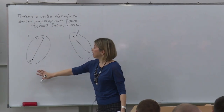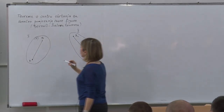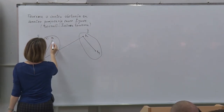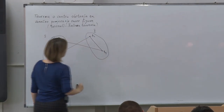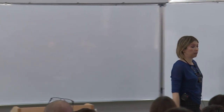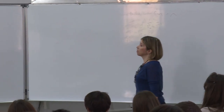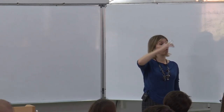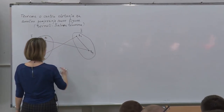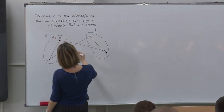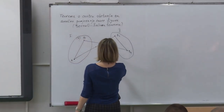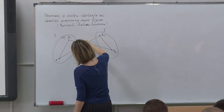Centar rotacije ove naše figure odredit ćemo na način da ćemo spojiti tačke A i A1 i tačke B i B1, koje u stvari predstavljaju tetive kružnih lukova koje su opisale ove naše dvije tačke. A onda ćemo centar rotacije naći u presiku simetrala ovih duži AA1 i BB1. Hajmo naznačiti centar duži AA1 i centar duži BB1, i vučemo normale.